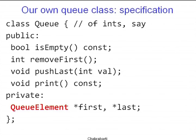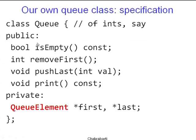Here is the queue class. For simplicity let us say we have a queue of integers. The public methods consist of: `bool isEmpty()` — a const method that does not change the queue; `removeFirst()` — removes the first int at the head of the queue, should not be called on an empty queue; `pushLast(int val)` — pushes an int to the end of the queue; and `print()`. Inside, the queue will be implemented using a different struct called QElement. The queue maintains two pointers: one to the first element in the list, and one to the last. If first equals last equals null, the queue is empty.